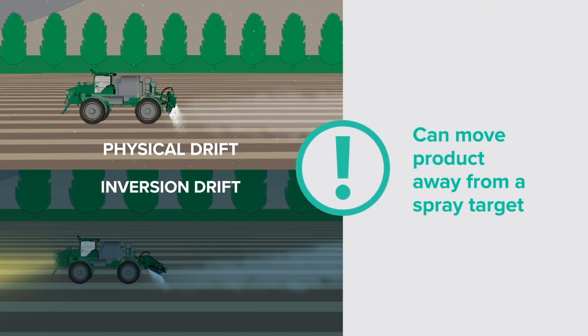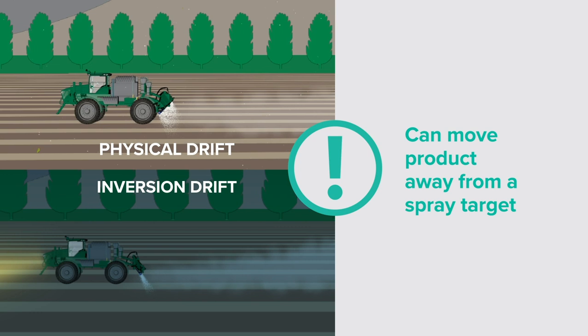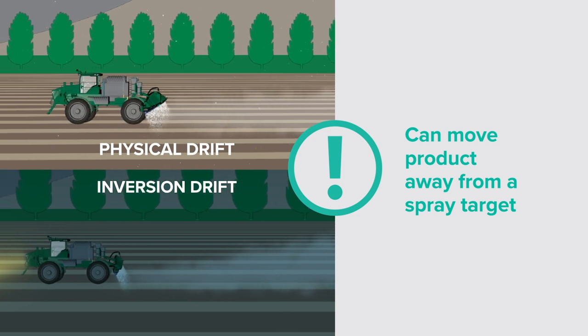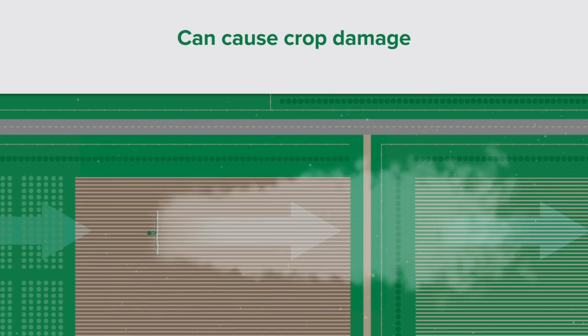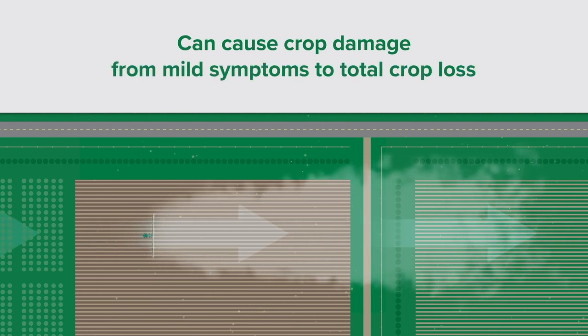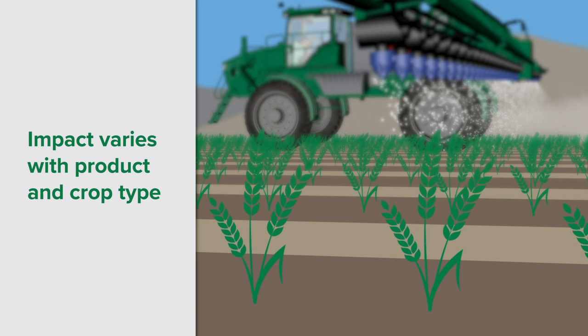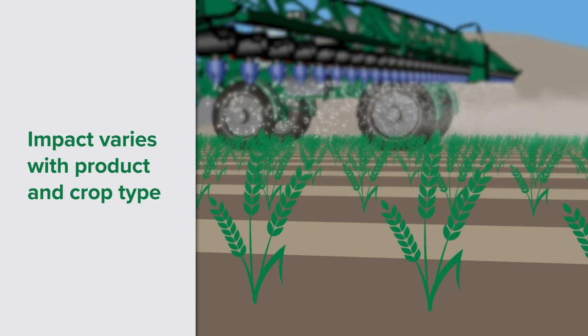Physical drift and inversion drift can move product away from a spray target and cause unintended yet significant crop damage. Physical drift can have a direct impact on you and your neighbour. It can cause crop damage ranging from mild symptoms through to total crop loss. Its impact varies with the product used and the crop type being impacted. It's usually easy to trace as crop damage is greatest close to the spray source and reduces the further away you go.